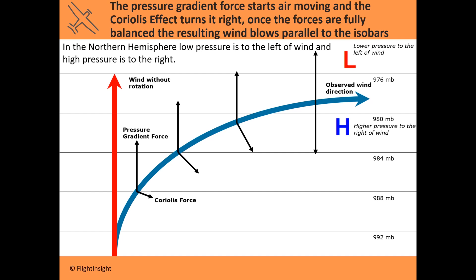That's going to be really important in determining the direction of airflow in a low-pressure system and a high-pressure system. If you have a high-pressure system, the wind is always going to be blowing to that side of it that keeps the high-pressure on its right. In the Northern Hemisphere, the high-pressure is to the right of the wind and the low-pressure is to the left of the wind.